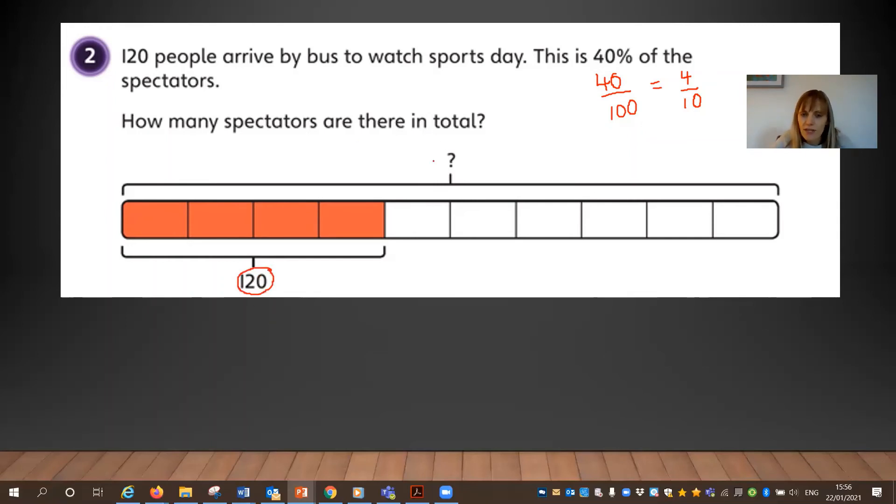Now this time, in order for us to calculate the whole number, we've got to do an extra step. Because we can't just think, well, I'm going to do 120 times 10. That's not going to work, is it? What I've got to think is, first of all, is what actually is the value of just one tenth? Because that's going to make me be able to answer this correctly. So one tenth, how would I do it? Well, I know that four tenths is 120. So I could do 120 and divide it by four. And that would give me an answer of 30. So I know that one tenth has the value of 30. So now I can calculate the whole amount because I can think, well, I'm in tenths. I know that one tenth equals 30. So in order to get the whole, I've got to do 30 times by 10. That's going to give me an answer of 300. So my whole is actually worth 300.